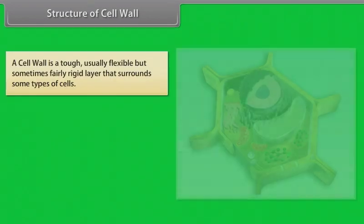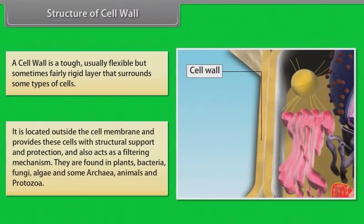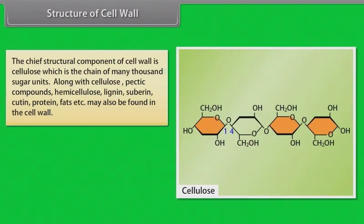Structure of cell wall: A cell wall is a tough, usually flexible but sometimes fairly rigid layer that surrounds some types of cells. It is located outside the cell membrane, providing structural support and protection, and also acts as a filtering mechanism. Cell walls are found in plants, bacteria, fungi, algae and some archaea. Animals and protozoa do not have cell walls. The chief structural component of the cell wall is cellulose, which is a chain of many thousands of sugar units.